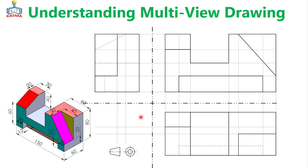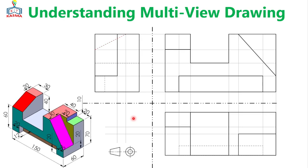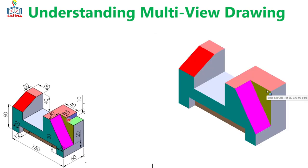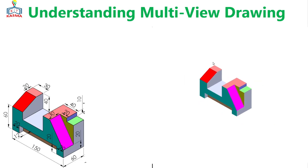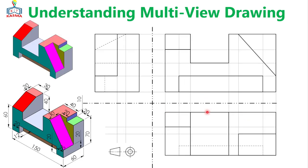Now we are almost completing every view. One feature is remaining — we are just removing this portion. If you look over here, this portion is removed. Then the remaining part will have this projection. So we'll add only this feature to our multi-view drawing.